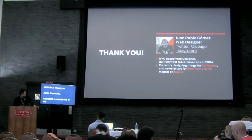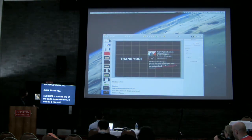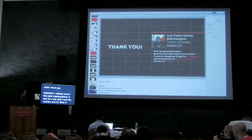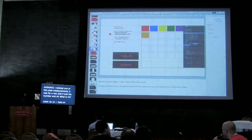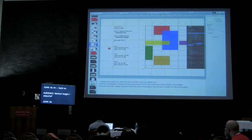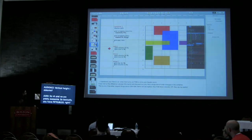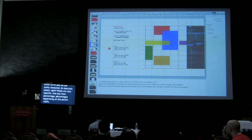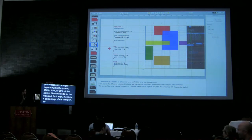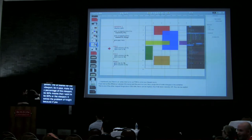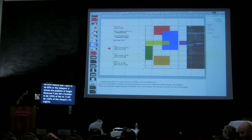Question: in the code demos there was a number followed by VH — what is VH? VH and VW are pretty awesome. Pixels are very specific. Percentages depend on the parent — 100%, 50%, 30% of the parent. VH and VW tell you the V stands for viewport. So you tell a container: make me X percentage of the viewport. 60 VW means 60% the width of the viewport, whatever screen you have. VH solves a lot of problems with height — if you say 100 VH, it will be 100% of the viewport height, which is different from height:100% because height depends on the parent while VH depends on the viewport.